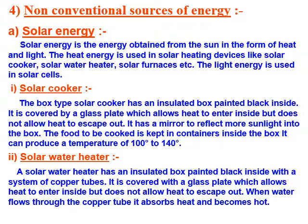Now let us talk about non-conventional sources of energy. First is solar energy — the energy obtained from the sun in the form of heat and light. The heat energy is used in solar heating devices like solar cooker, solar water heater, solar furnaces, and solar cells. The light energy is also used in solar cells.